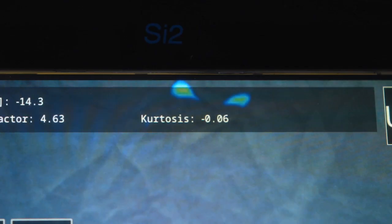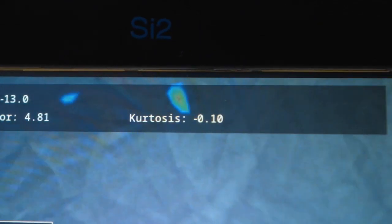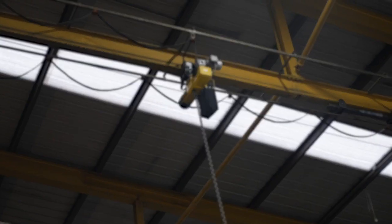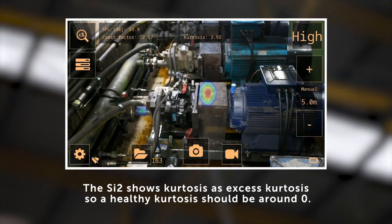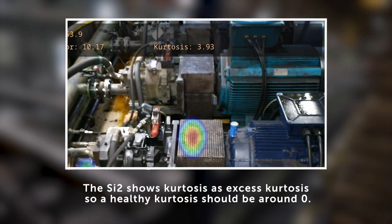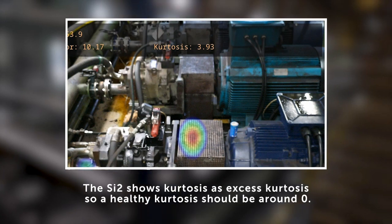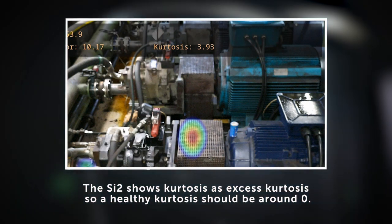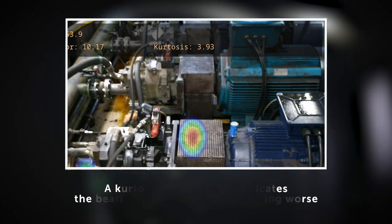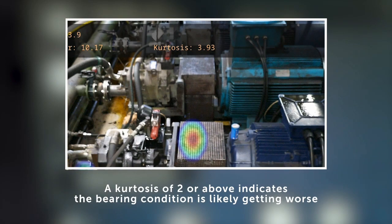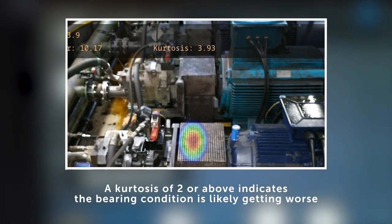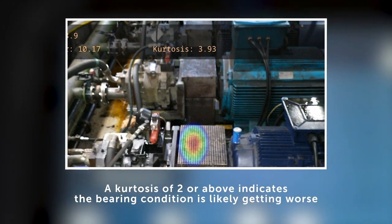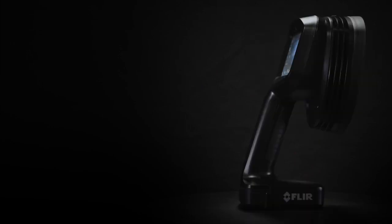Kurtosis is a measure of the distribution of the samples in the sound signal. The SI2 shows Kurtosis as excess Kurtosis, meaning that a healthy bearing will show a Kurtosis around 0. A Kurtosis of approximately 2 or above is likely to indicate that the bearing condition is getting worse.